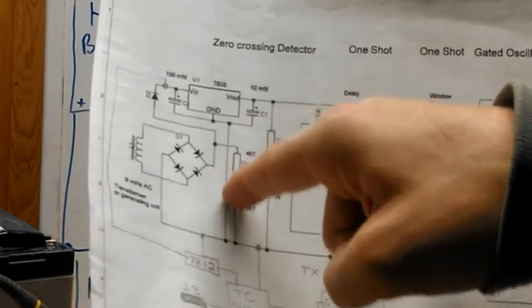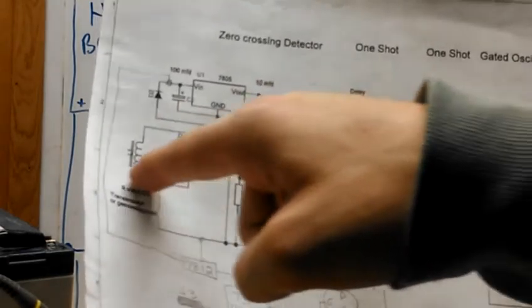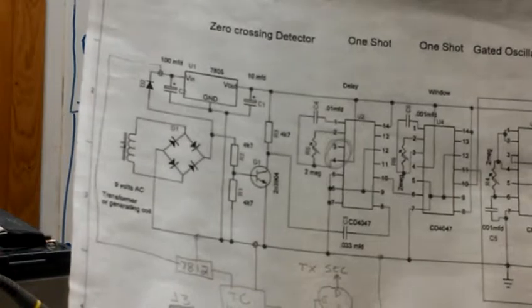And then the other half of the opto will replace this and this, the transformer. So I'll have to trigger off the H bridge somehow.